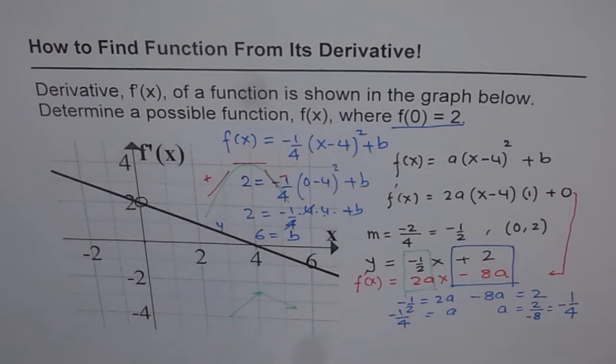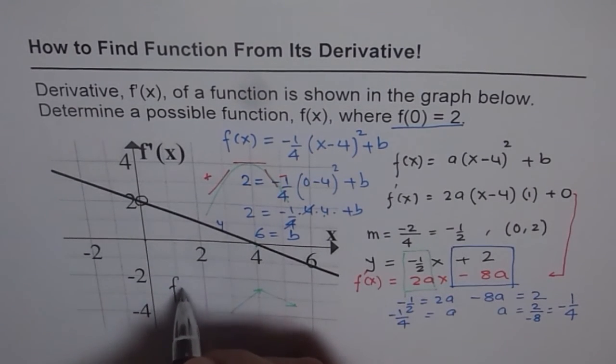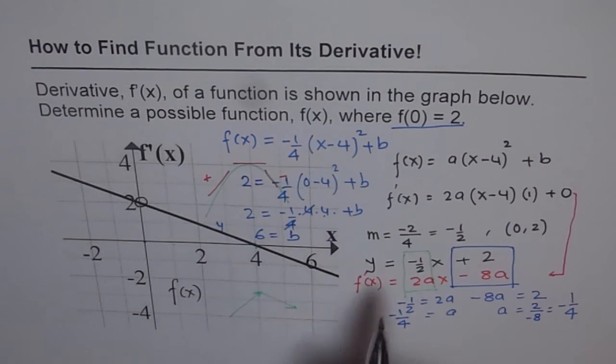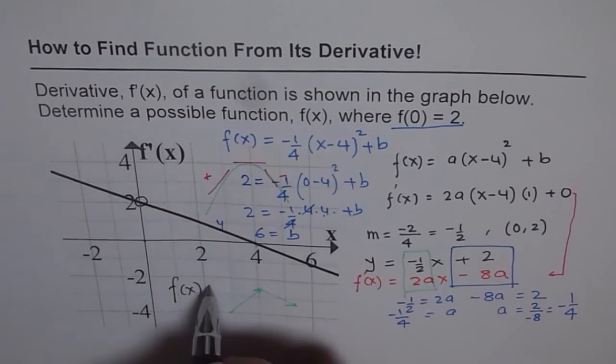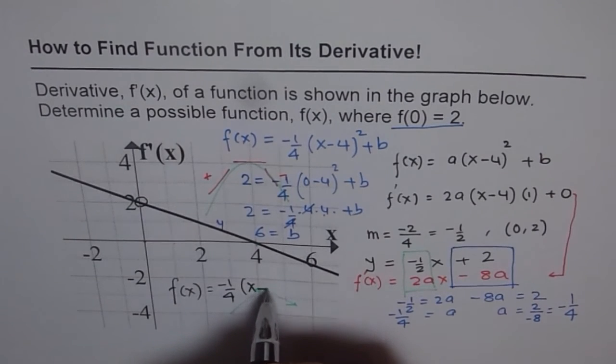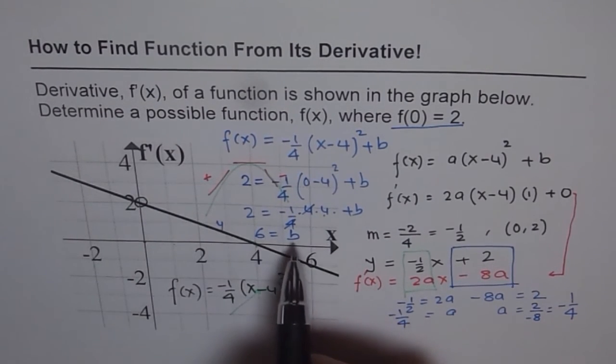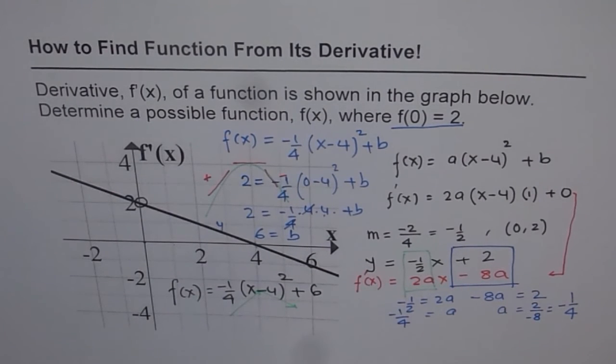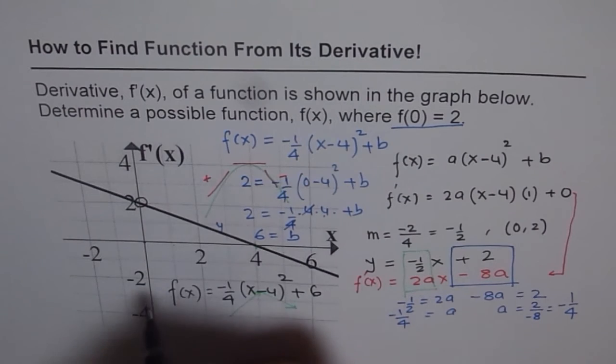And so we get our final answer. And the answer for us is, final answer: the function whose derivative is shown here should be a is minus 1 over 4, minus 1 over 4 times (x - 4)² and the value of b is 6 for us, plus 6. So that is the function. So that is our answer for this given function.